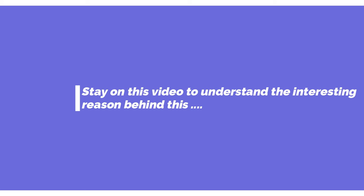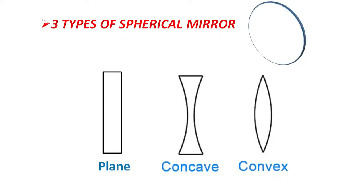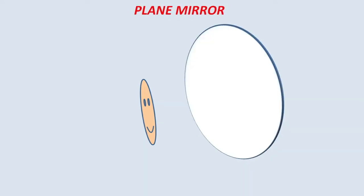There is a reason behind this — stay on this video to understand the interesting reason. First, let us see the three different types of mirrors we use in our daily life: plane mirror, convex mirror, and concave mirror. Let us see what will happen if a person stands in front of all three mirrors. Assume this is a person standing in front of a plane mirror — the normal one we use in our rooms, dressing tables, almirahs, and hand mirrors.